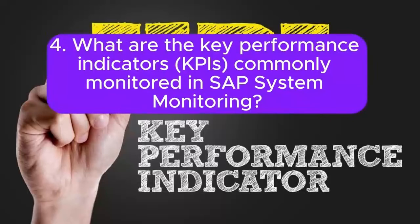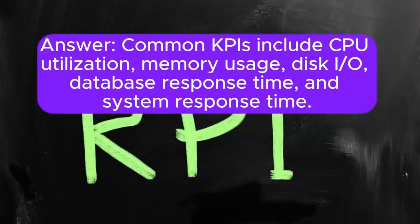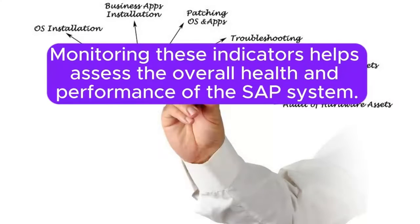4. What are the key performance indicators (KPIs) commonly monitored in SAP system monitoring? Answer: Common KPIs include CPU utilization, memory usage, disk I/O, database response time, and system response time. Monitoring these indicators helps assess the overall health and performance of the SAP system.